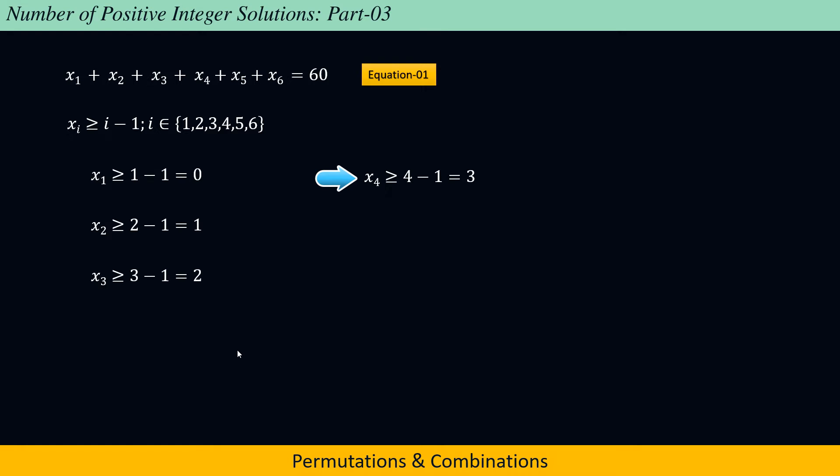x4 is greater than or equal to 4 minus 1, which equals 3. x5 is greater than or equal to 5 minus 1, which equals 4. And x6 is greater than or equal to 6 minus 1, which equals 5.